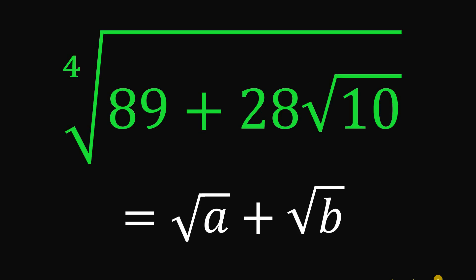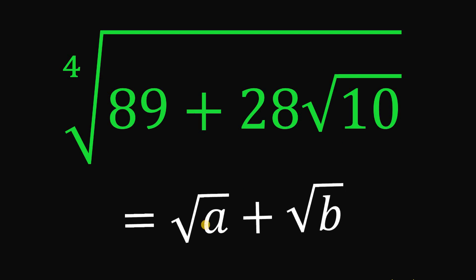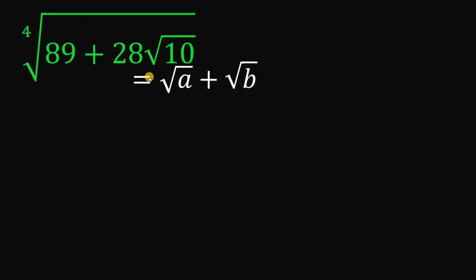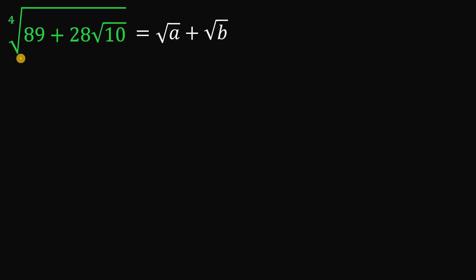For today's video we will answer a math challenge given by one of our followers. The question: simplify the fourth root of 89 plus 28 times square root of 10 in the form of square root of a plus square root of b. Pause this video right now and see if you can answer this question. If you're done, post your answer and solution in the comment section below.